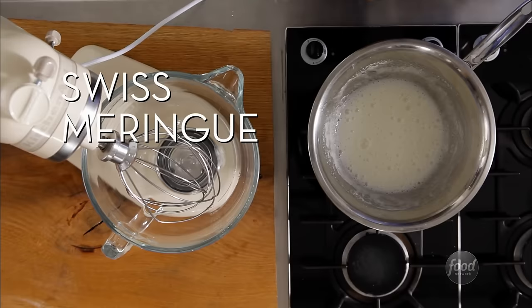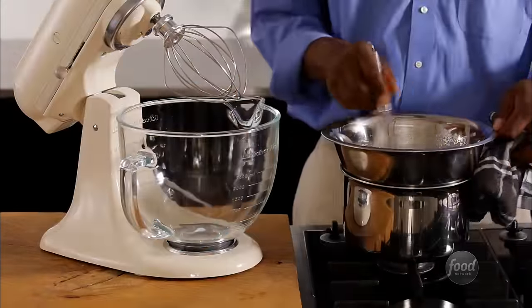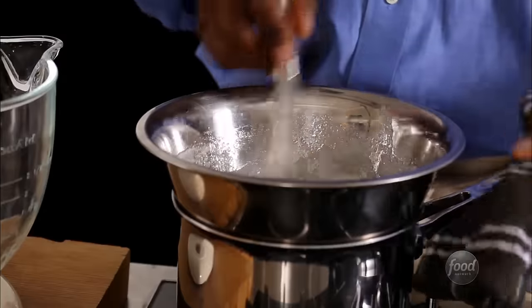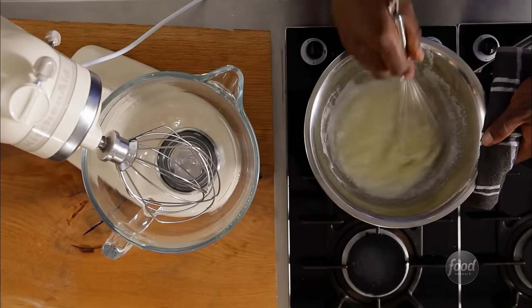A Swiss meringue is a cooked meringue and it's also more stable, meaning it won't collapse. This meringue is used in buttercreams or can also be poached for the classic dessert floating island.